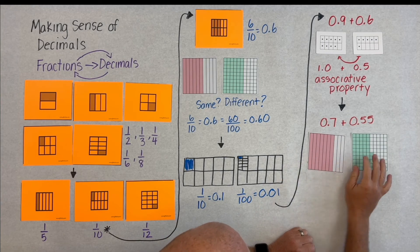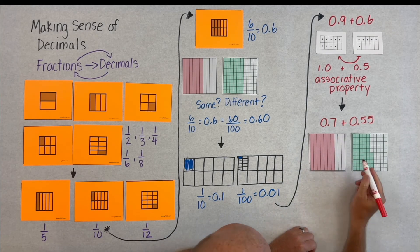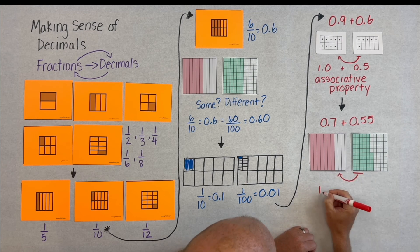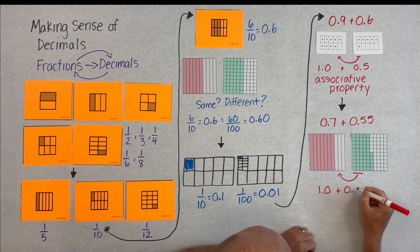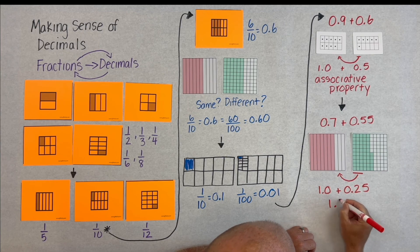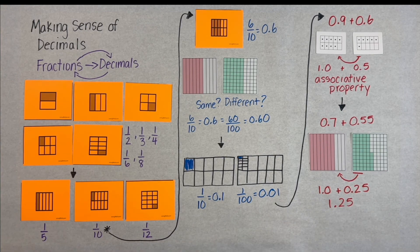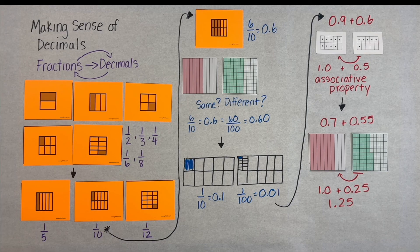And this same understanding, we don't need to be lining up the decimals. Here, when we're adding seven-tenths and fifty-five-hundredths, we can take three-tenths from our fifty-five-hundredths, give it to our seven-tenths to make a whole, and we're left with one and twenty-five-hundredths. And there's your need to know.